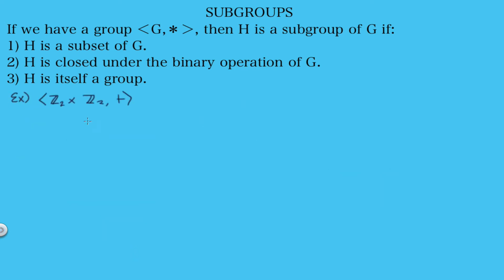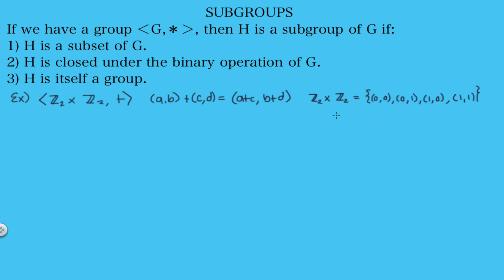Let's look at another example: the set ℤ₂×ℤ₂ with addition defined as (a,b)+(c,d)=(a+c, b+d). This group is also known as the Klein four-group. Its elements are {(0,0), (0,1), (1,0), (1,1)}, where (0,0) is the identity element. Automatically we know it has two subgroups: the trivial group containing only the identity, and the improper group which is the group itself. Now let's find any non-trivial proper subgroups.